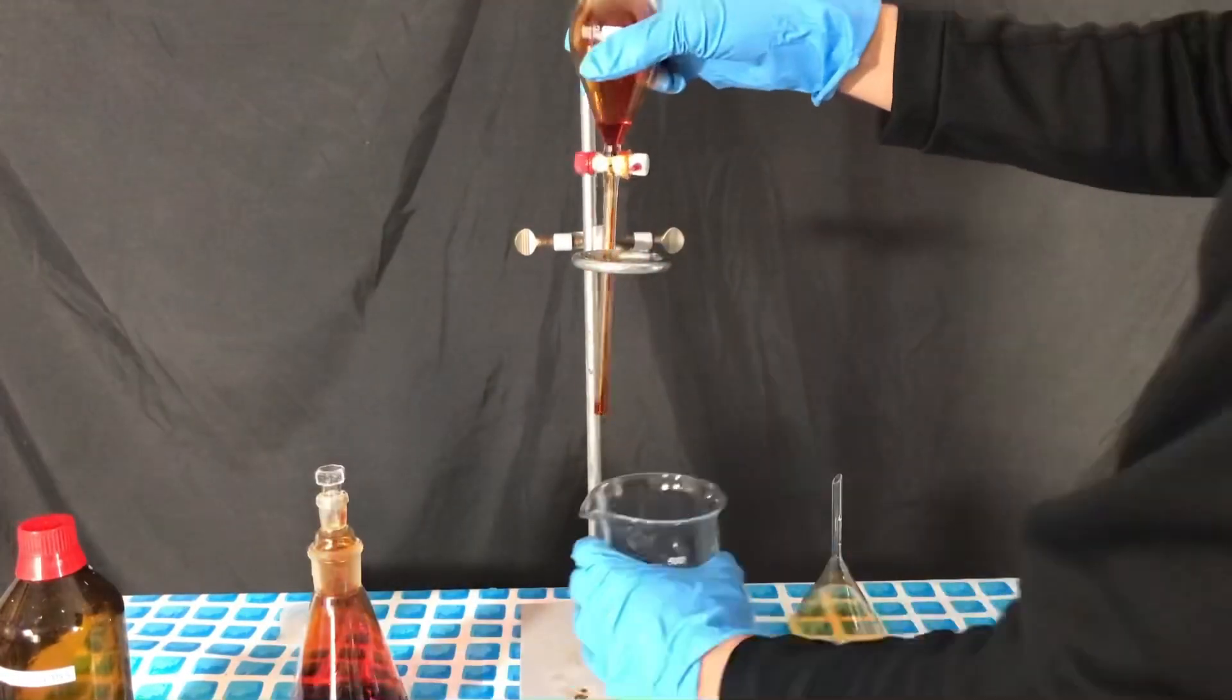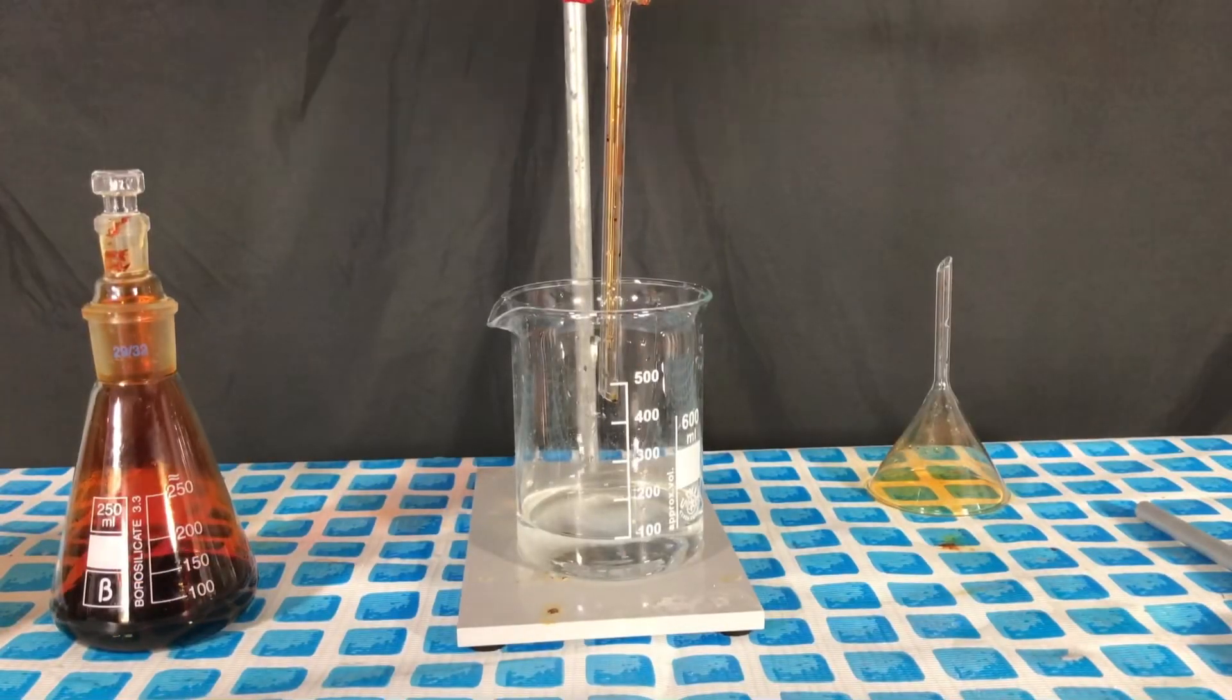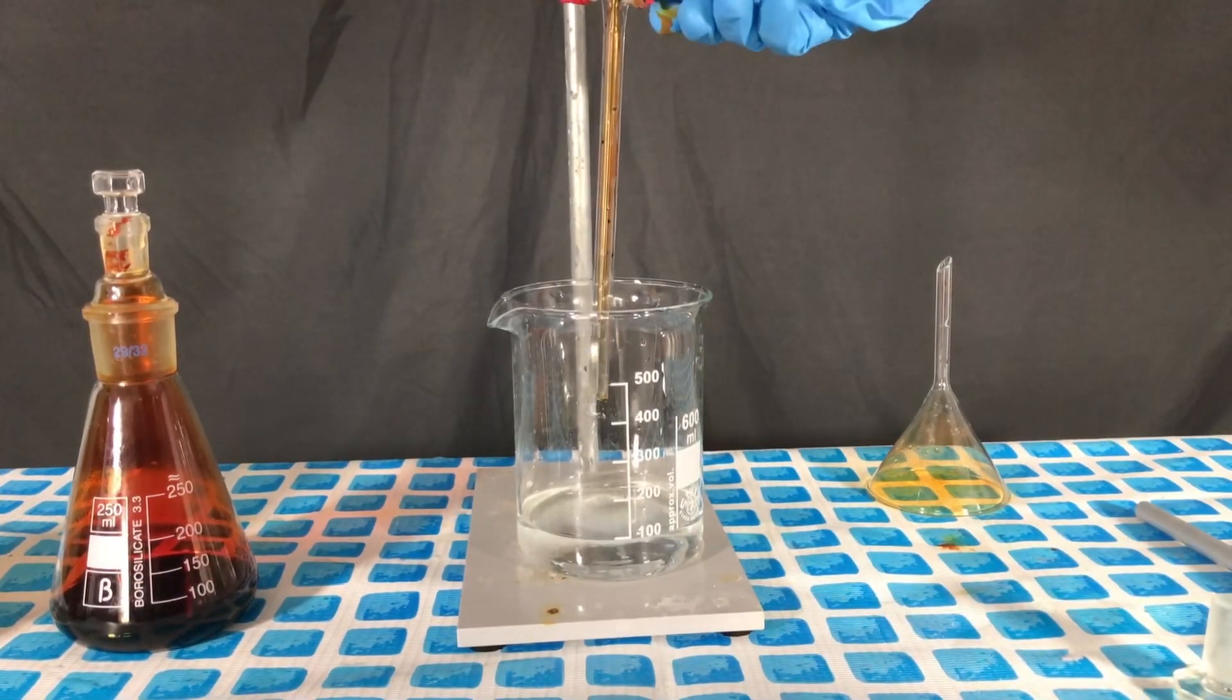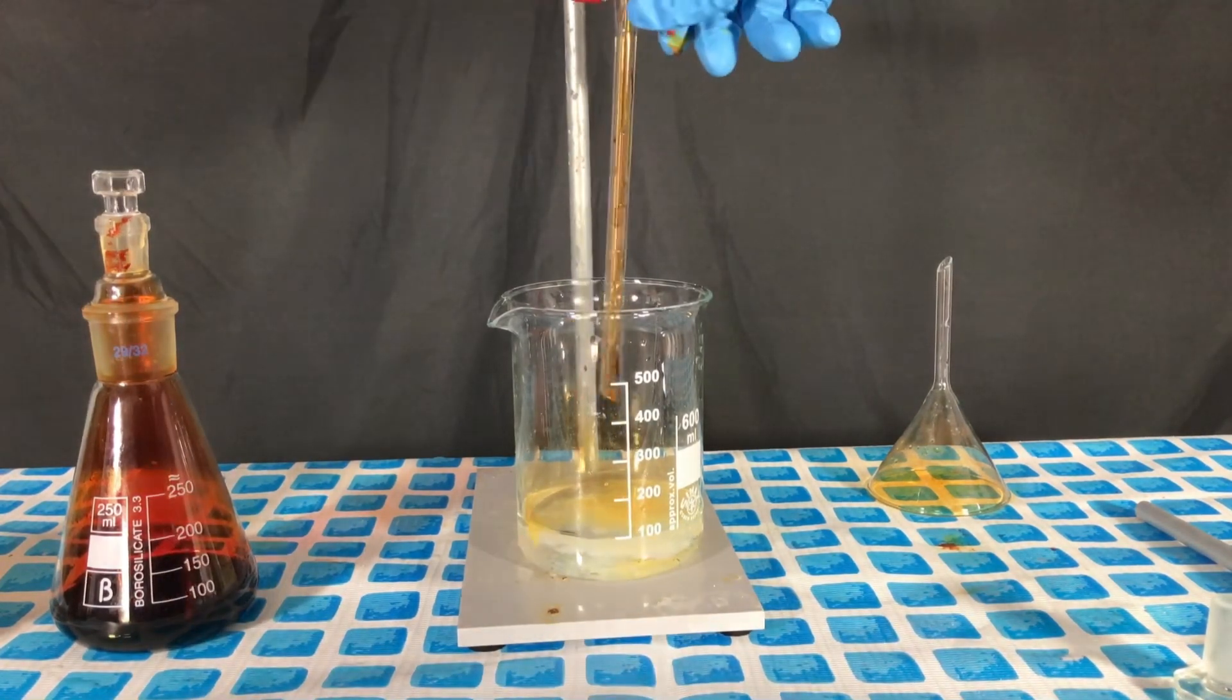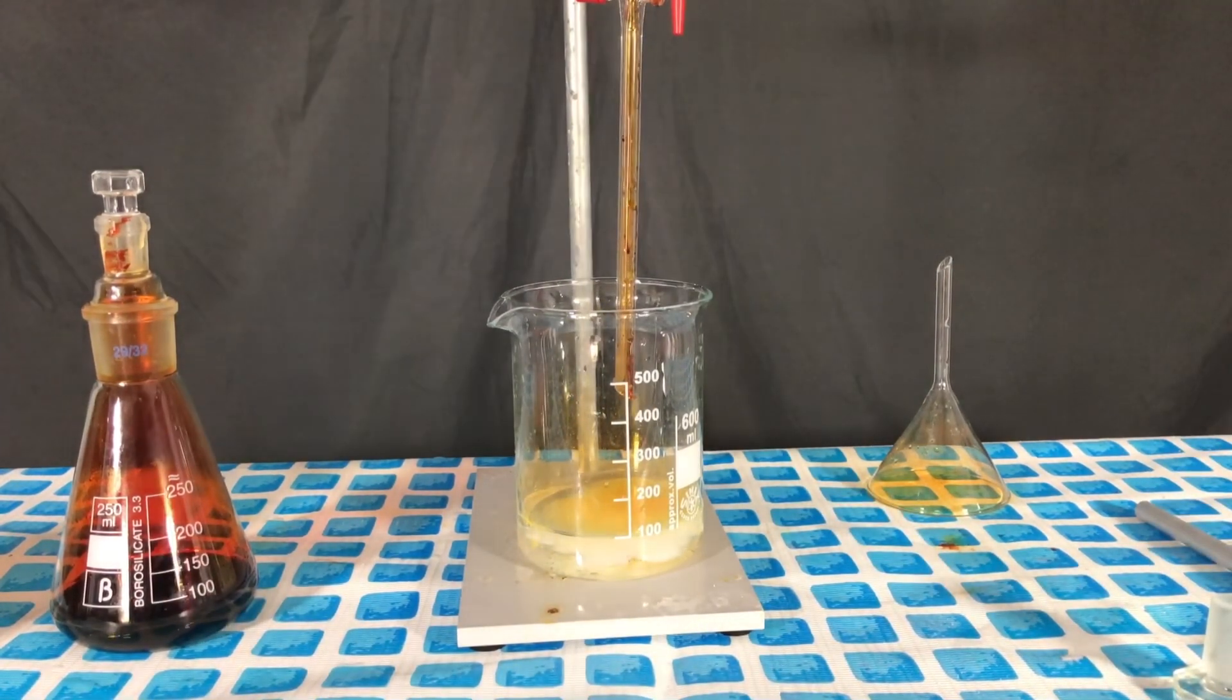The bromine water was neutralized using sodium thiosulfate solution. While doing this the bromine is converted into bromide and you can also see some sulfur precipitating.